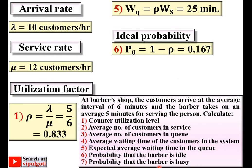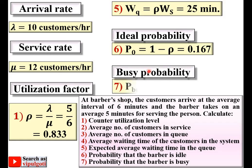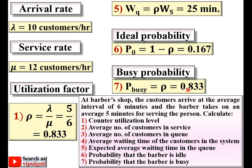Finally, the probability that the barber is busy means the shop is busy. The utilization factor of the shop is already known to be rho = 0.833, so the busy probability equals rho = 0.833.